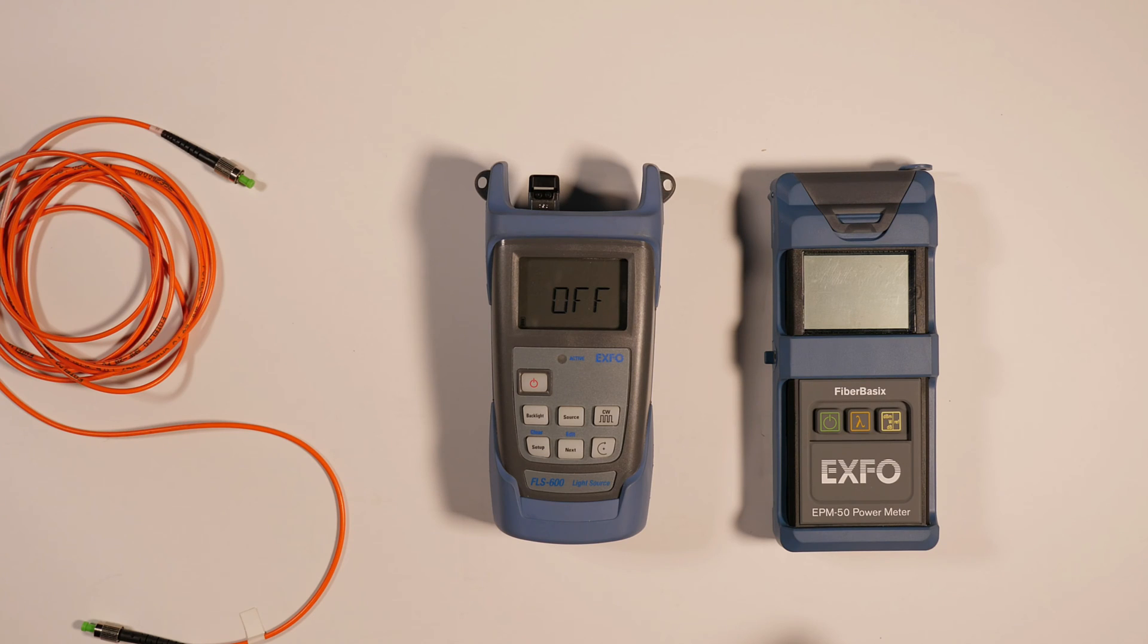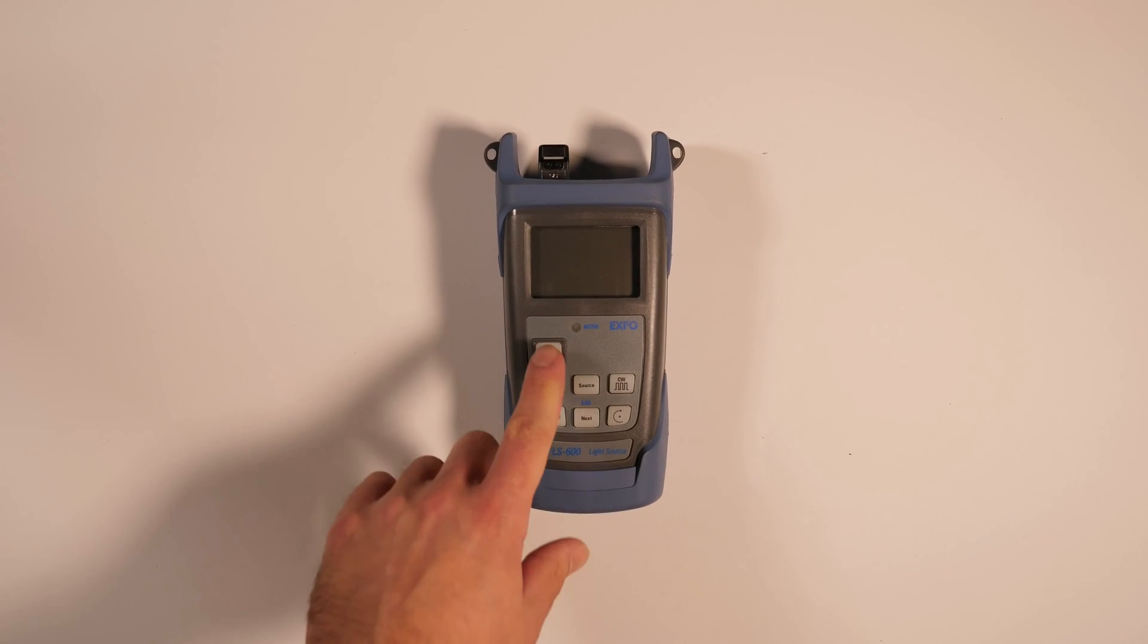To operate the EXFO FLS 600 for loss measurement, follow these general steps. Turn on the device by pressing the power button.